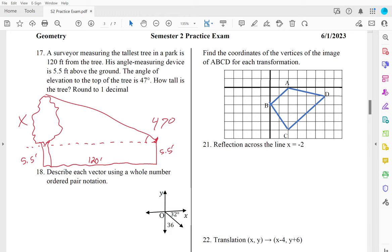We have tangent because we're looking for opposite and we are given adjacent. Remember that what we find we have to add 5.5 to in order to get the full height of the tree. So tangent of 47 degrees is x over 120. If I multiply both sides by 120, I get x. But x is not my answer. 120 tan 47 is 128.68. But I have to add 5.5 to that to get my answer, which gives 134.18, which is 134.2 feet.